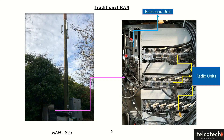On the left side, the baseband unit is doing some heavy lifting here. It is processing the data at layer 2 and layer 3. Don't worry about the functionalities of these units — we'll talk about them in more detail in the subsequent slides, even at the protocol level.